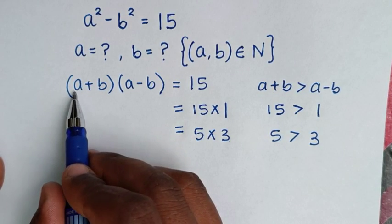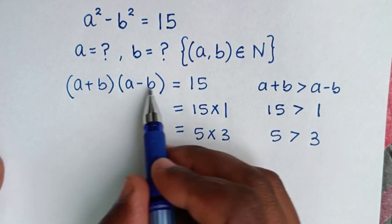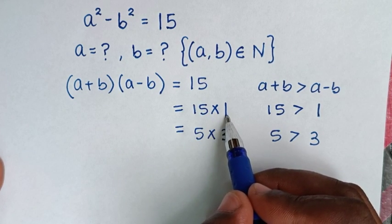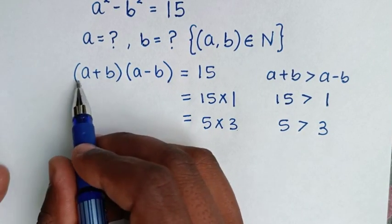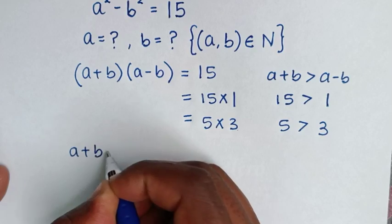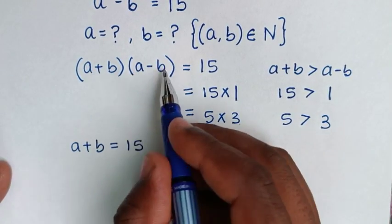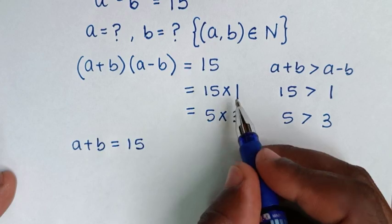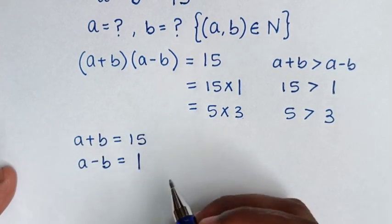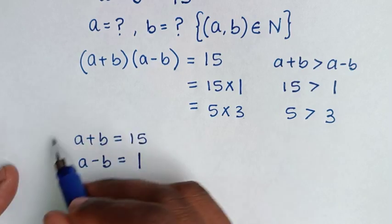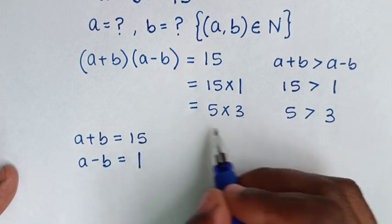For the first case, comparing our factored form with 15 times 1: a plus b is equal to 15, and a minus b is equal to 1. This gives us our first system of equations to solve.